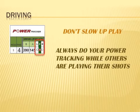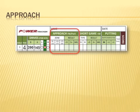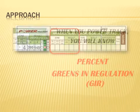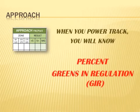You don't want to slow up play, so always do your power tracking while others in your group are hitting their shots. Now let's power track our approach shots to the green. One of the most common statistics in golf is greens in regulation, and when you power track, you will know your GIR percentage.